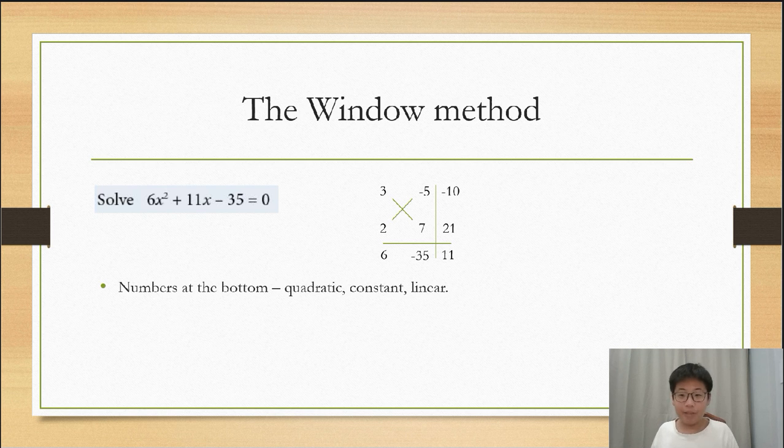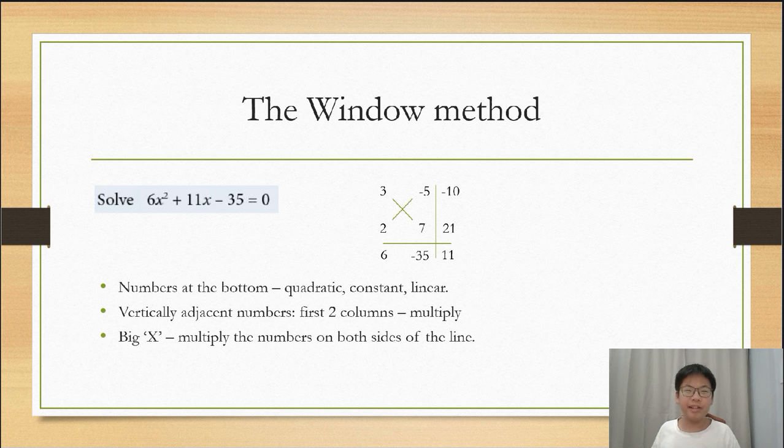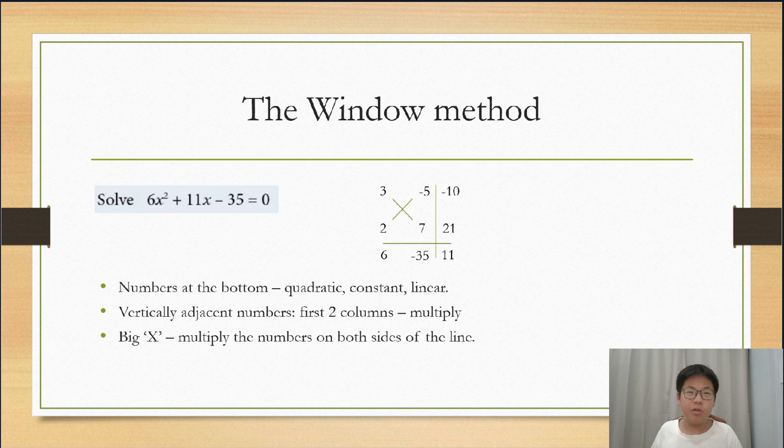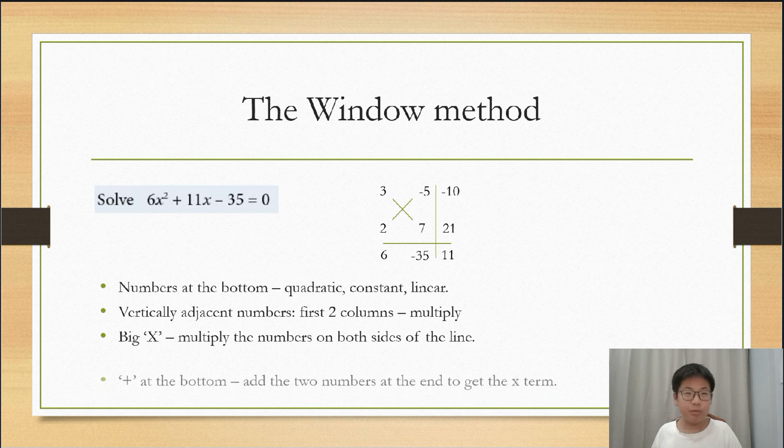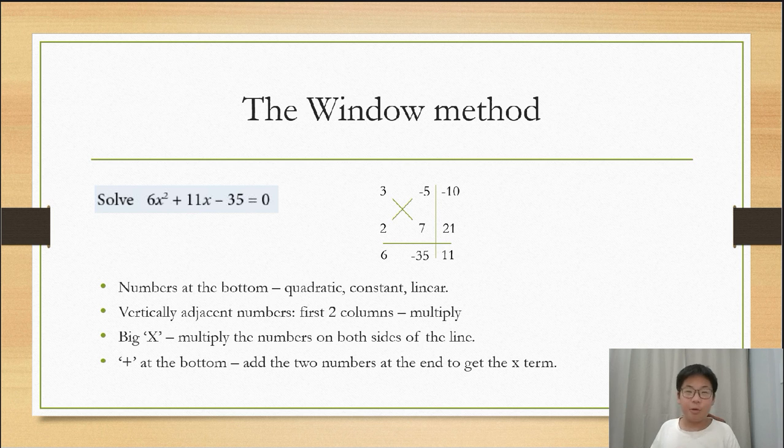The numbers at the bottom are the quadratic constant and linear terms. The vertically adjacent numbers you should multiply them. And the big X in the middle means multiply the numbers on both sides of the diagonal line. So 3 times 7 will turn into 21, and 2 times negative 5 will turn into negative 10. And the little plus at the bottom means add the two numbers to get the X term. The window method works for all quadratics, but we'll see a method which is much more versatile later.